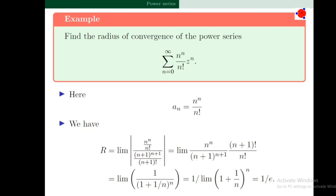Find the radius of convergence of sigma n=0 to infinity (n^n / n!) · z^n. Here it is difficult to apply the Cauchy-Hadamard formula, so we apply R = lim |a_n / a_{n+1}|. With a_n = n^n / n!, this equals lim of [n^n / (n+1)^(n+1)] · (n+1) = lim of 1 / (1 + 1/n)^n. Since (1 + 1/n)^n converges to e, we get R = 1/e.